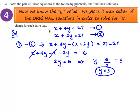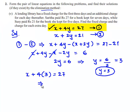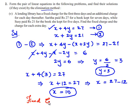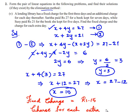Now, in order to obtain the value of x, let us substitute the value of y in equation 1. x plus 4 times 3 equals 27, which implies x plus 12 equals 27, giving x equal to 27 minus 12, which is 15. Therefore, the fixed charge is equal to rupees 15 and the charge for each extra day is equal to 3 rupees.